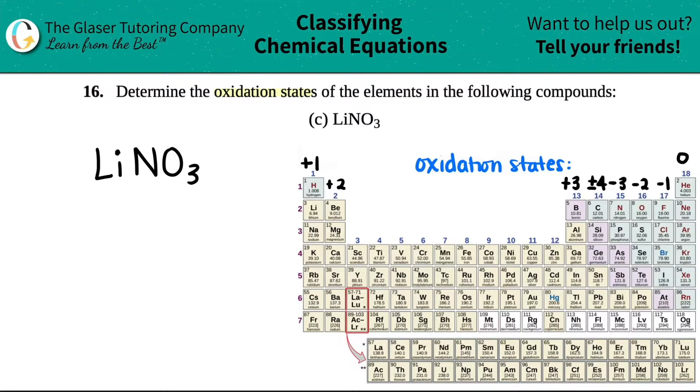Okay. So for this one, what we're going to do is we have a little bit of an issue here because we have three elements. Usually what happens is you'll have two elements in which you can easily solve for both elements' oxidation states. However, you have lithium, you have nitrogen, and you have oxygen. Now there's a little bit of a trick here.